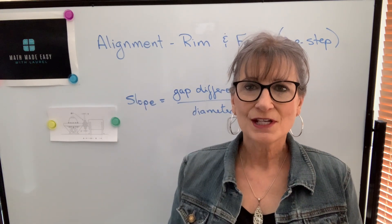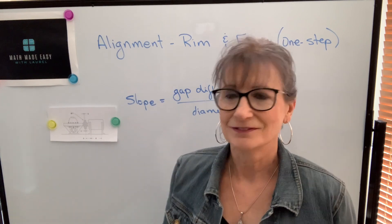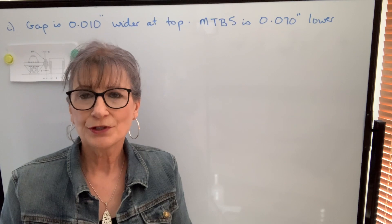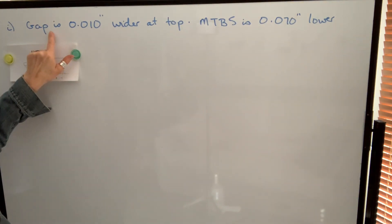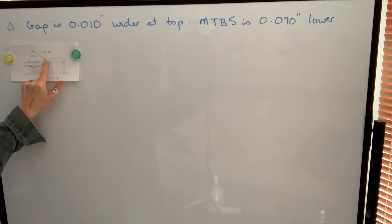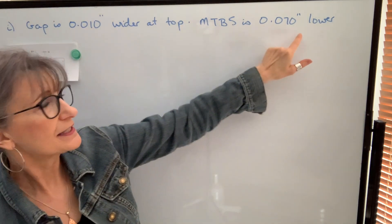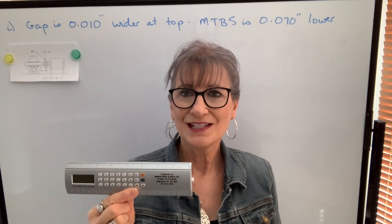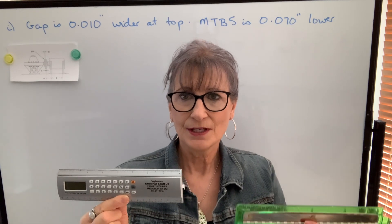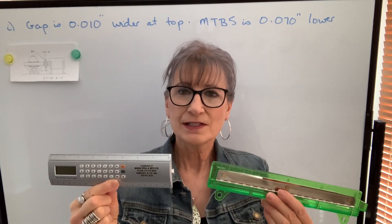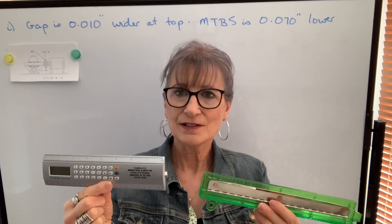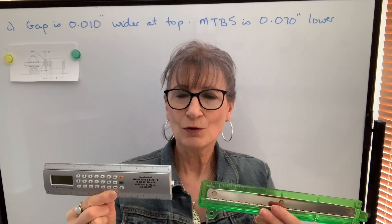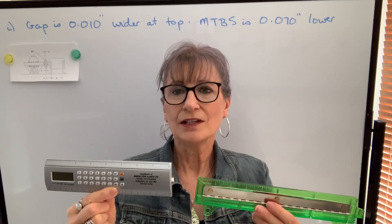Let's look at an example first without worrying about the dial indicators. I've taken my dial indicator readings, interpreted them, and determined that the gap is ten-thousandths wider at the top and that the machine to be shimmed is seventy-thousandths lower. So assuming our fixed machine's center line is parallel to the ground, our movable is going to be sitting at an angle — the gap is wider at the top and this machine is sitting seventy-thousandths lower at the movable coupling.